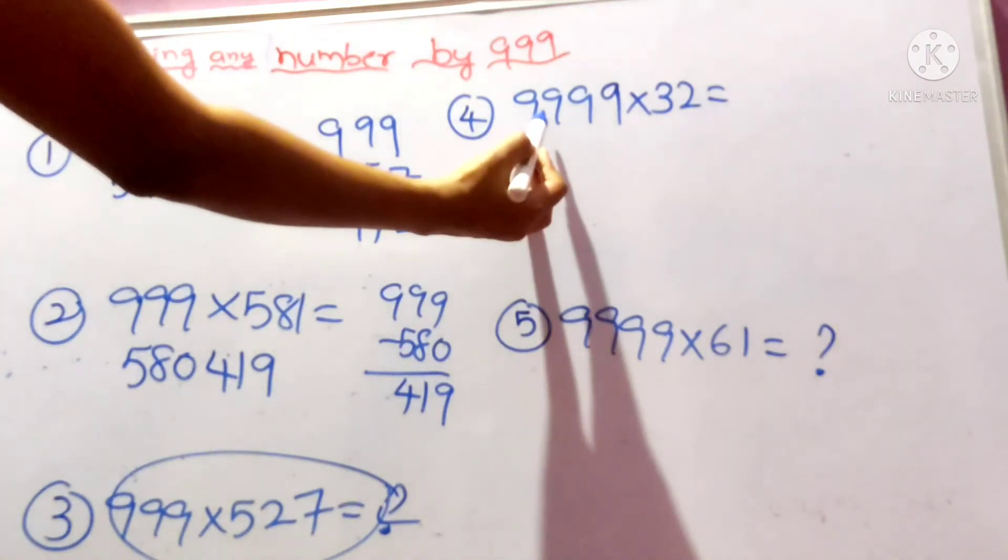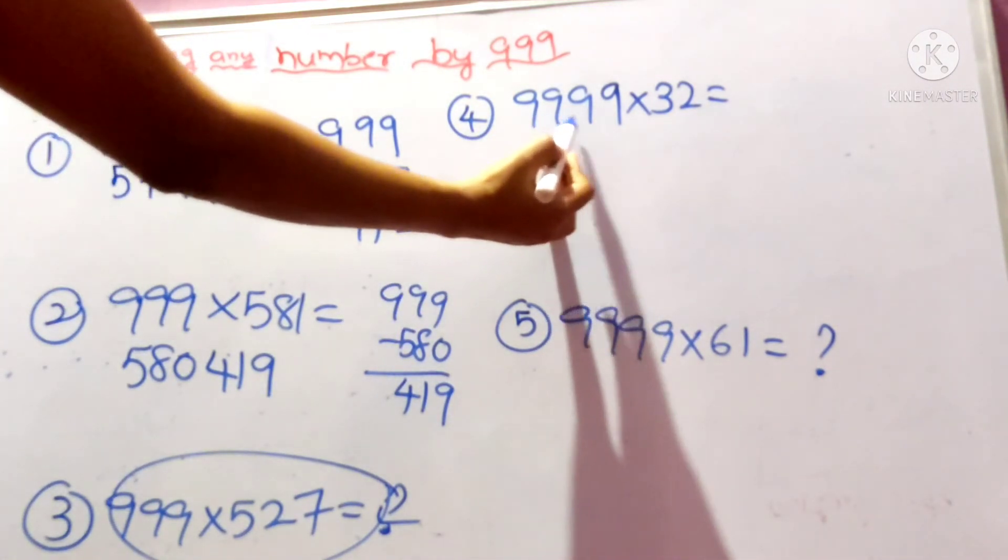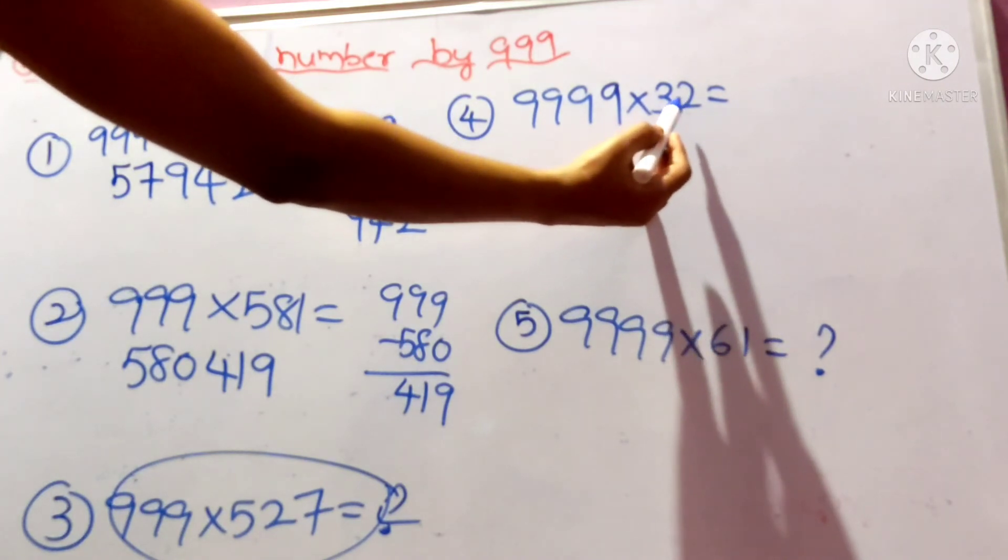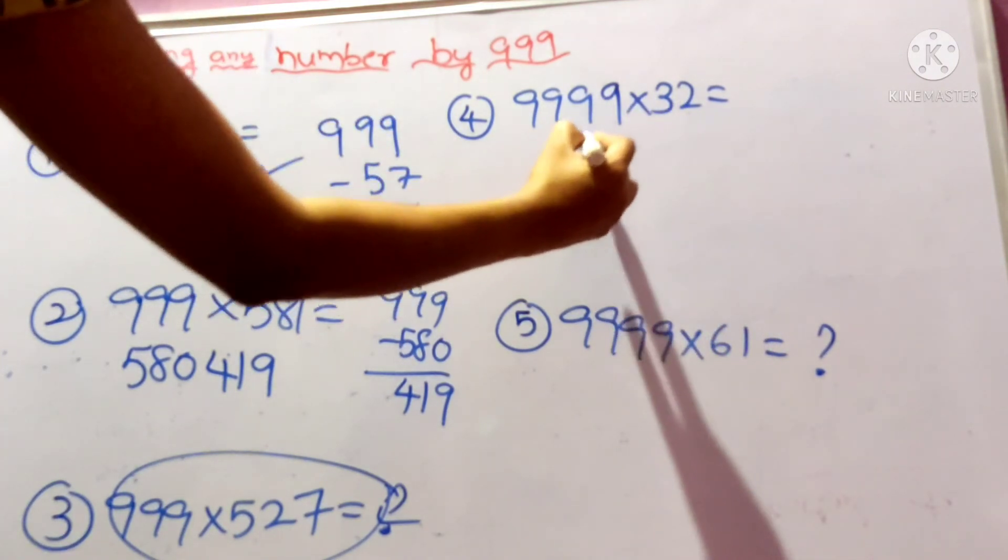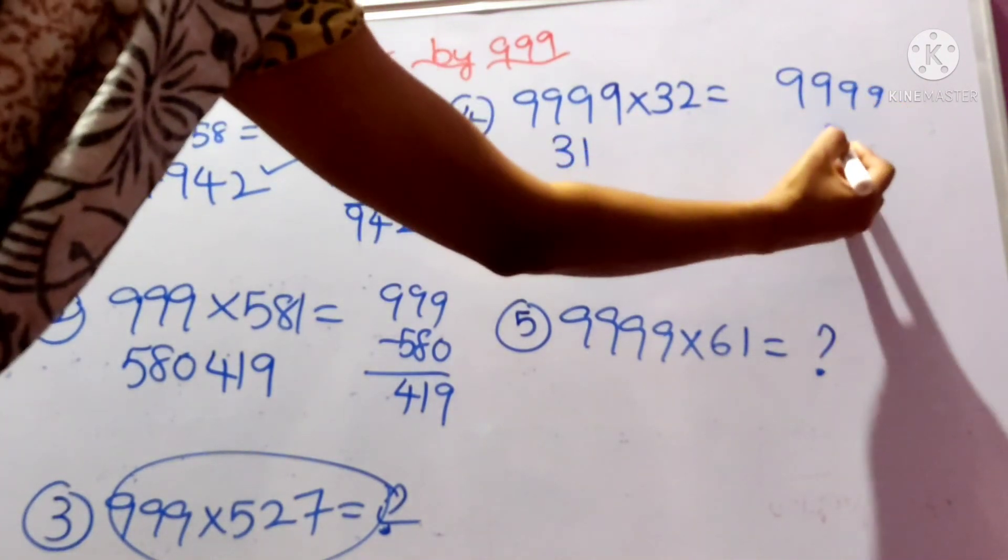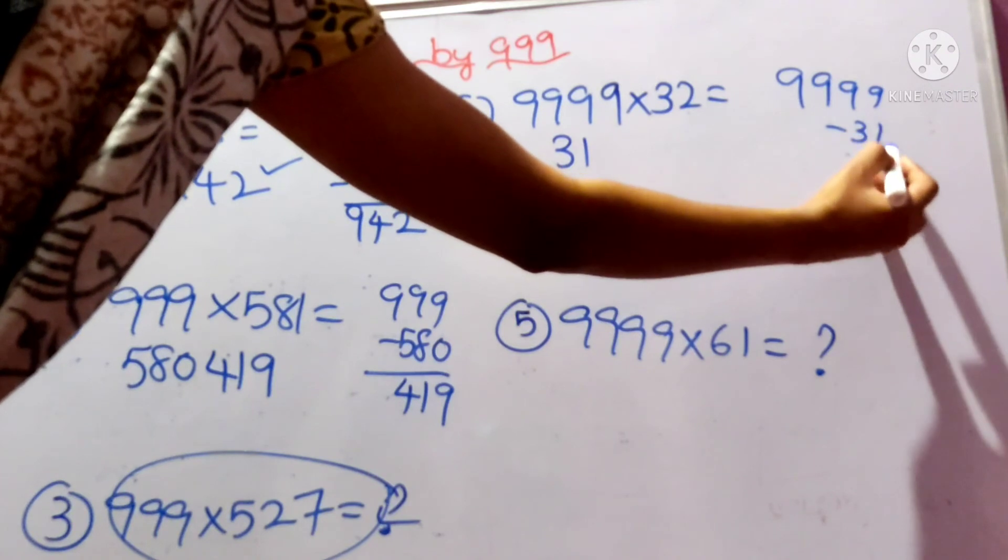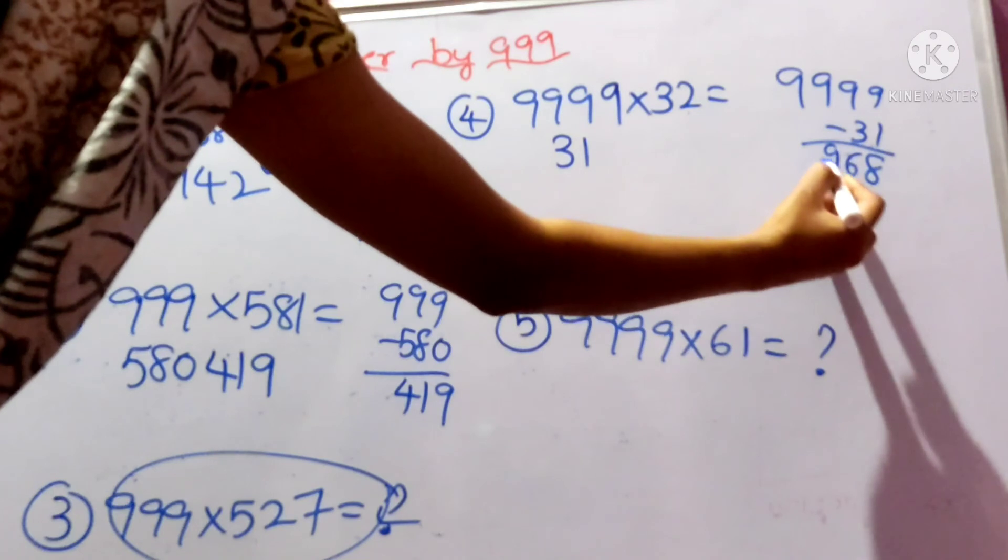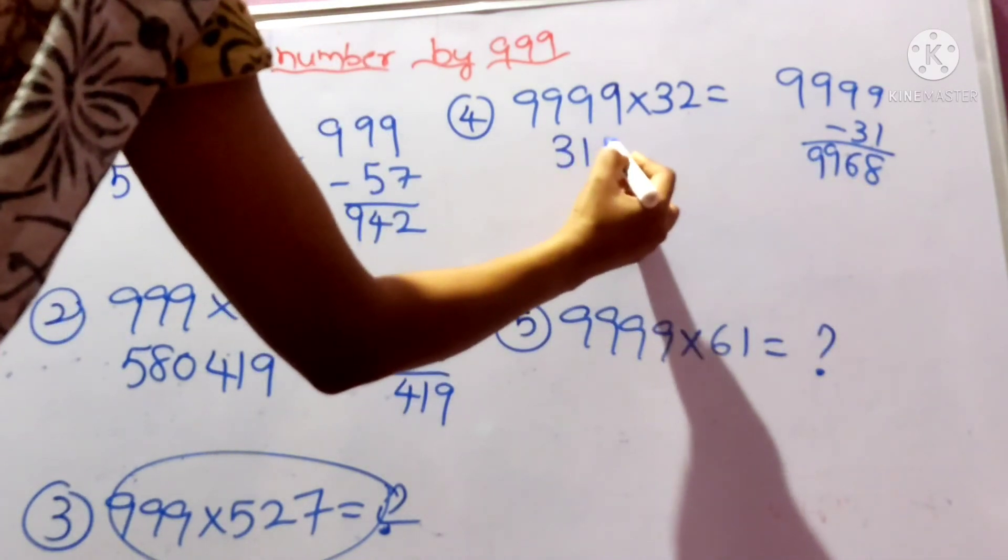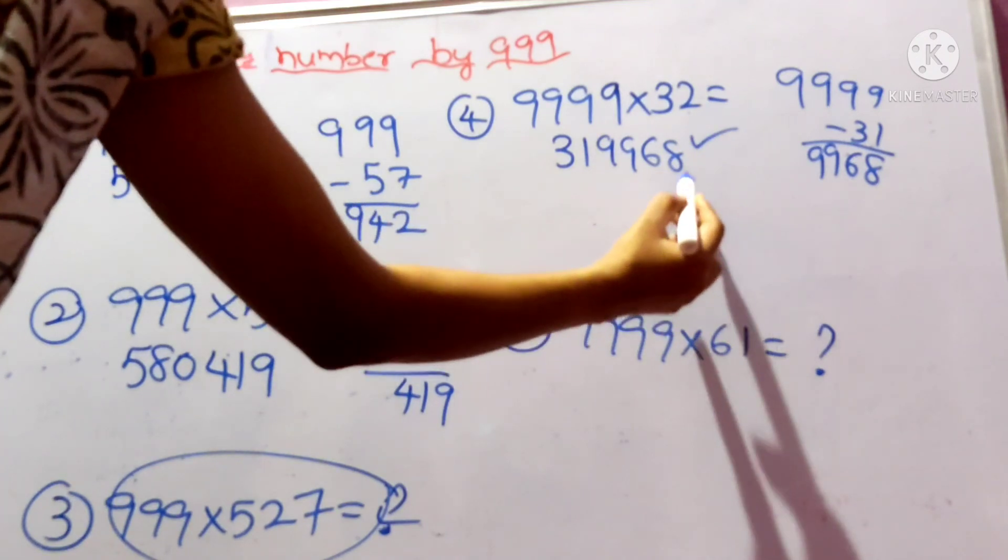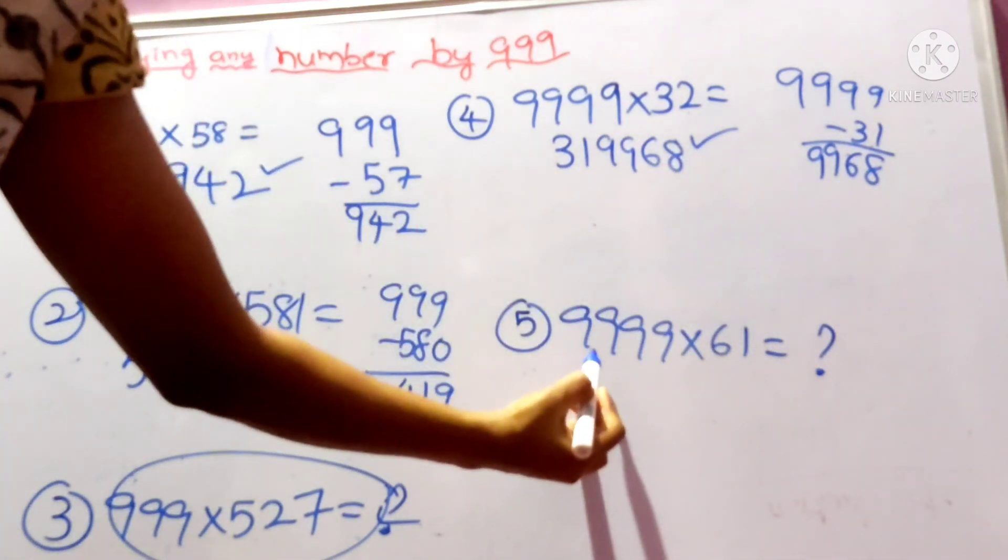Now here I have taken four 9s: 9999×32. In the same way, less than 32 is 31. Now 9999 minus 31: 9-1 is 8, 9-3 is 6, then 9, 9. So the answer is 31,9968.